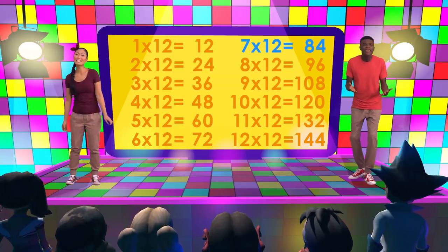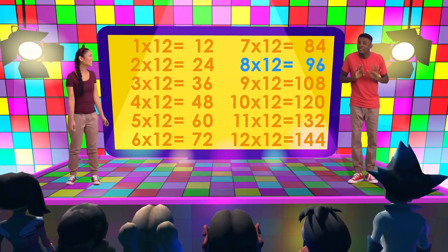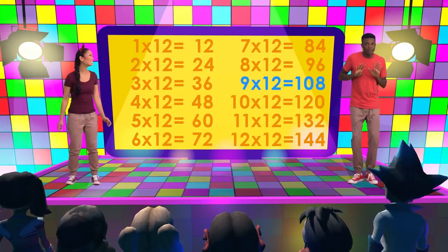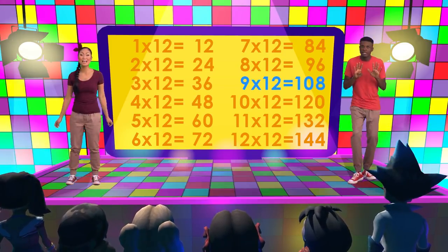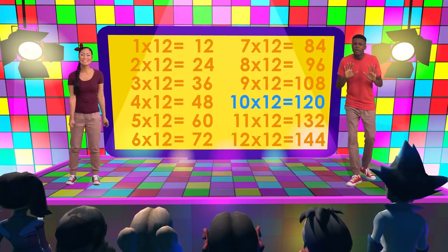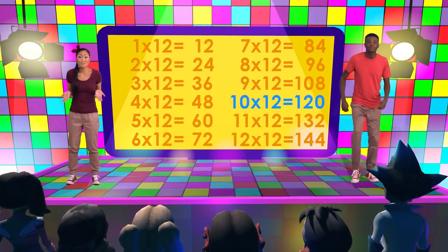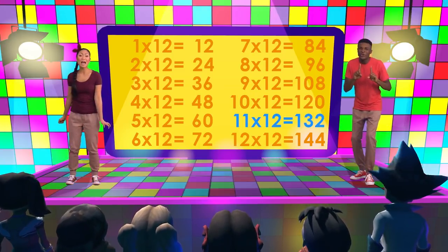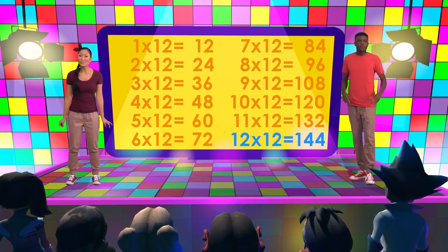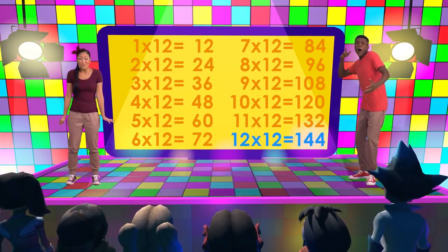7 times 12 is 84. 8 times 12 is 96. 9 times 12 is 108. 10 times 12 is 120. 11 times 12 is 132. 12 times 12 is 144!